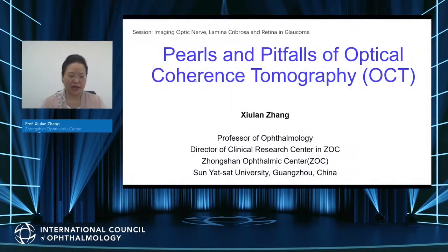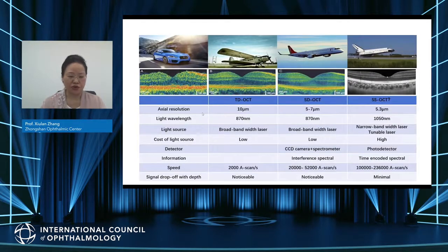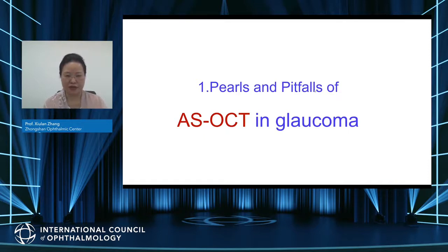Good afternoon, ladies and gentlemen. I would like to share with you the pros and pitfalls of optical coherence tomography. My name is Xiu Lan Zhang, from Zhongshan Ophthalmic Centre, Sun Yat-sen University, Guangzhou, China. I have no financial disclosures. OCT has evolved from TD to SD to SS-OCT, with faster scanning speed, stronger penetration, and clearer images. OCT can provide not only structural but also functional information. Let's talk about the pros and pitfalls of AS-OCT in glaucoma first.